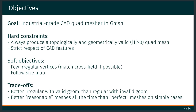The good structure is more of a bonus and secondary objective. We prefer to make conservative choices to always have valid geometry and mesh, rather than the opposite.